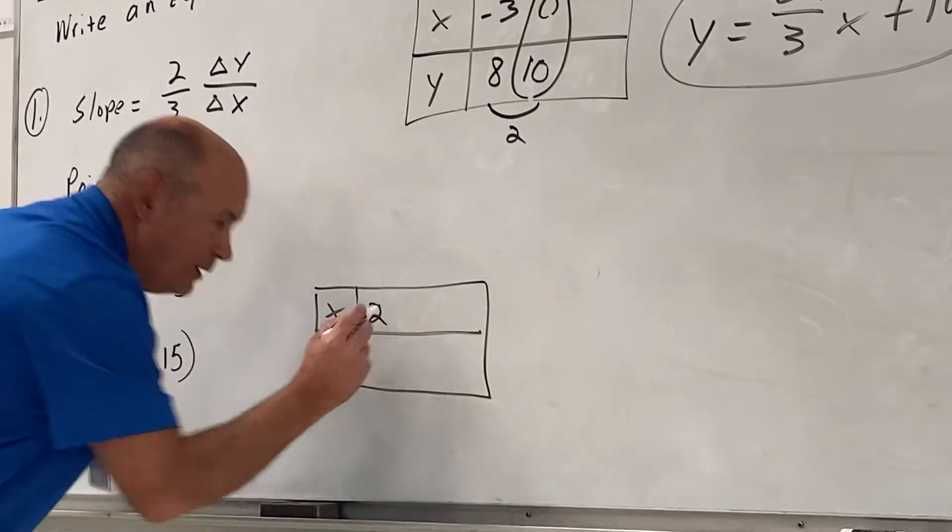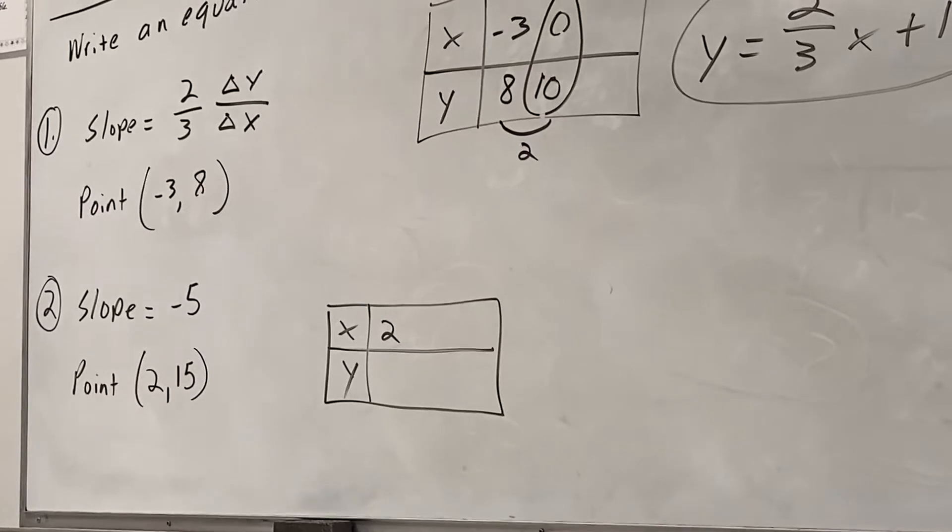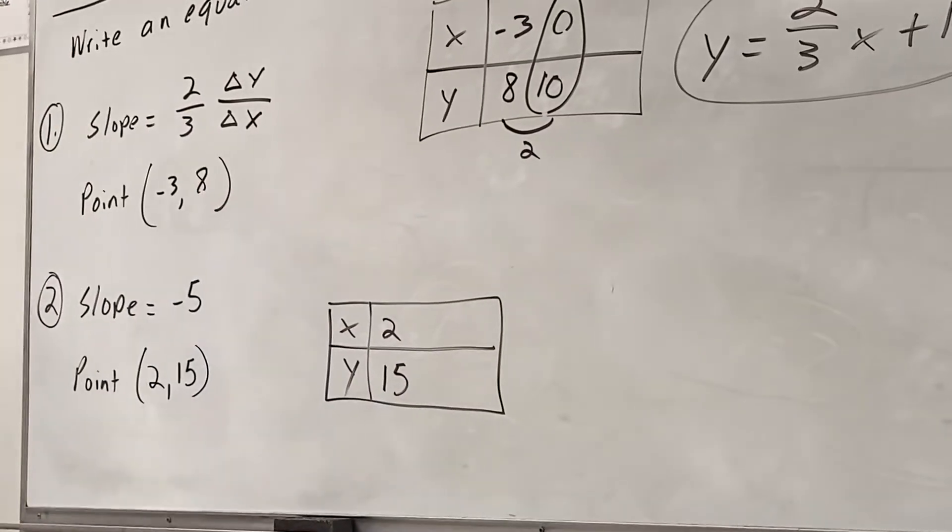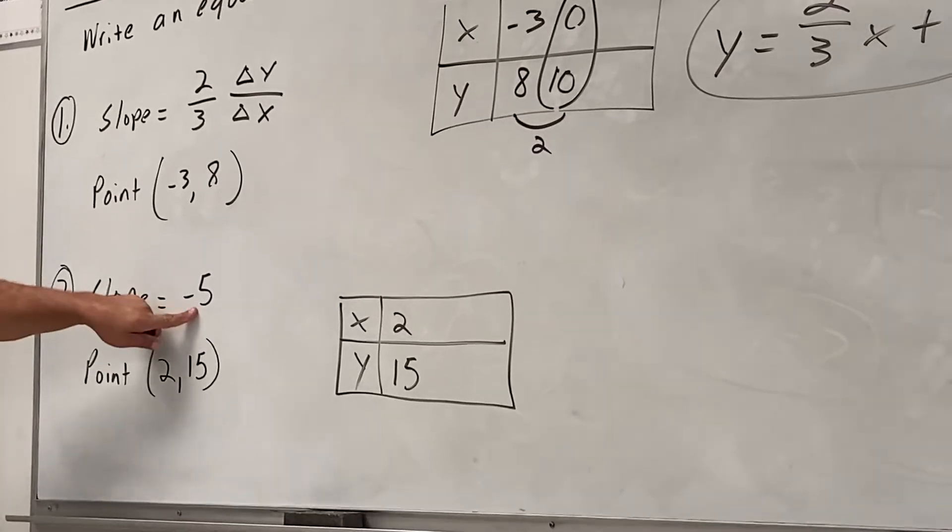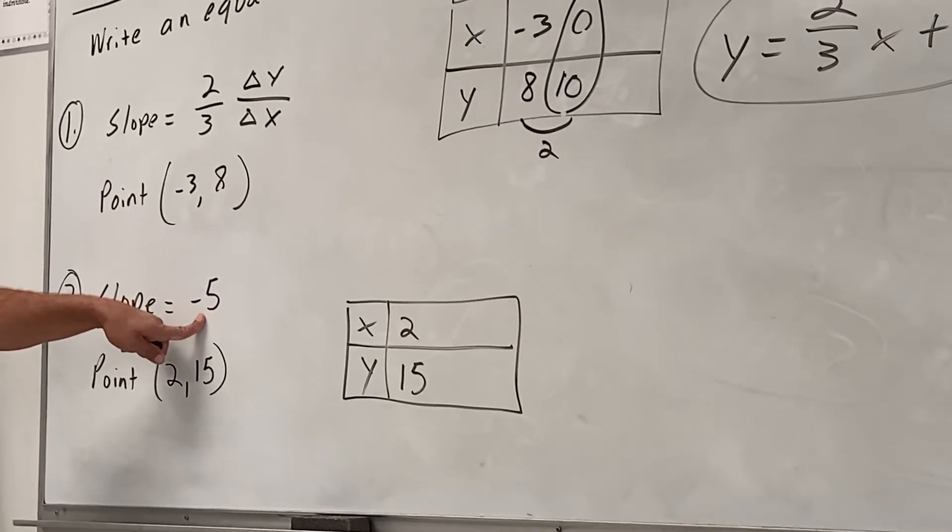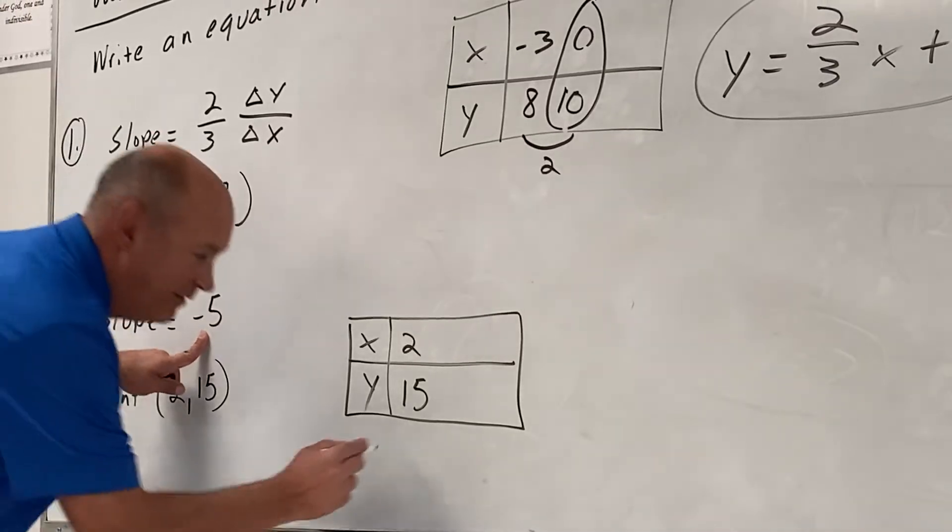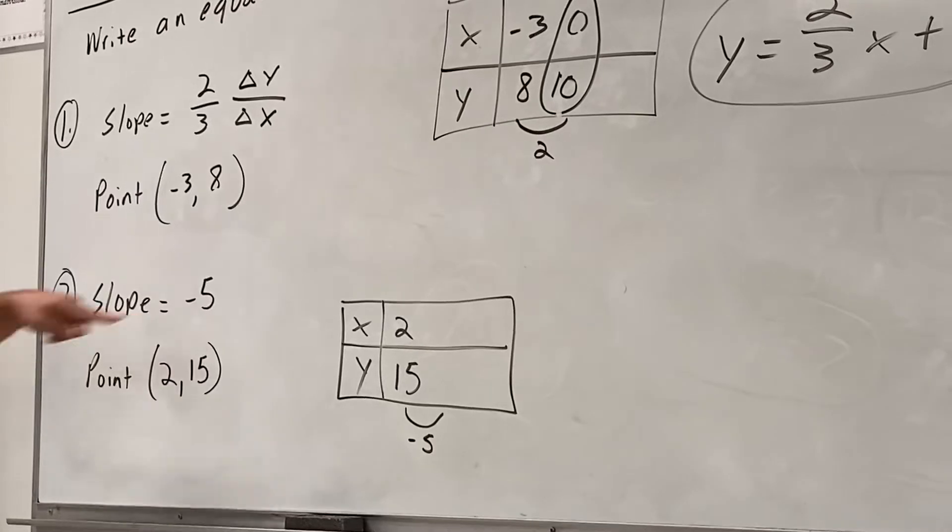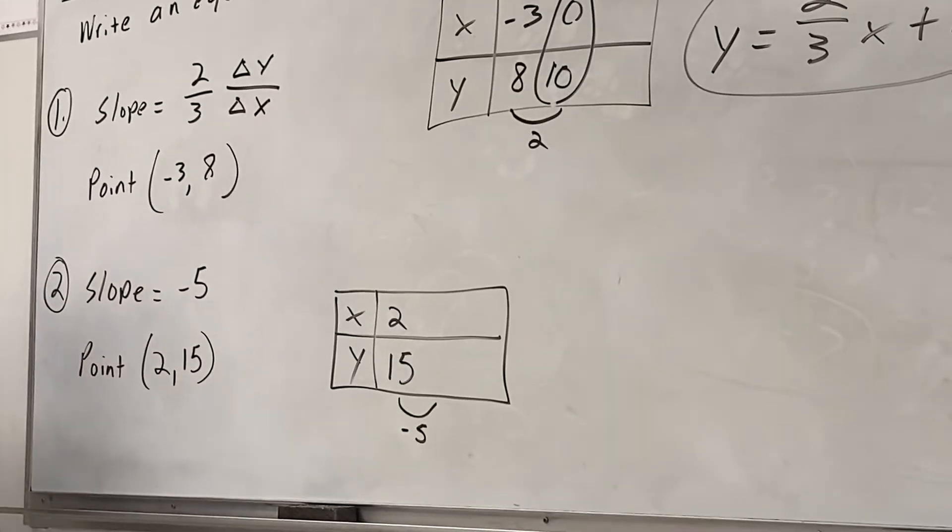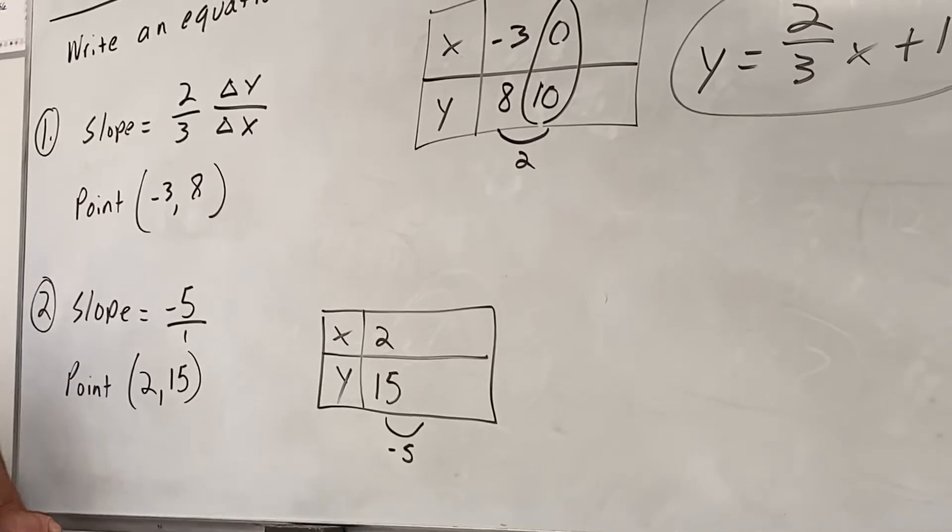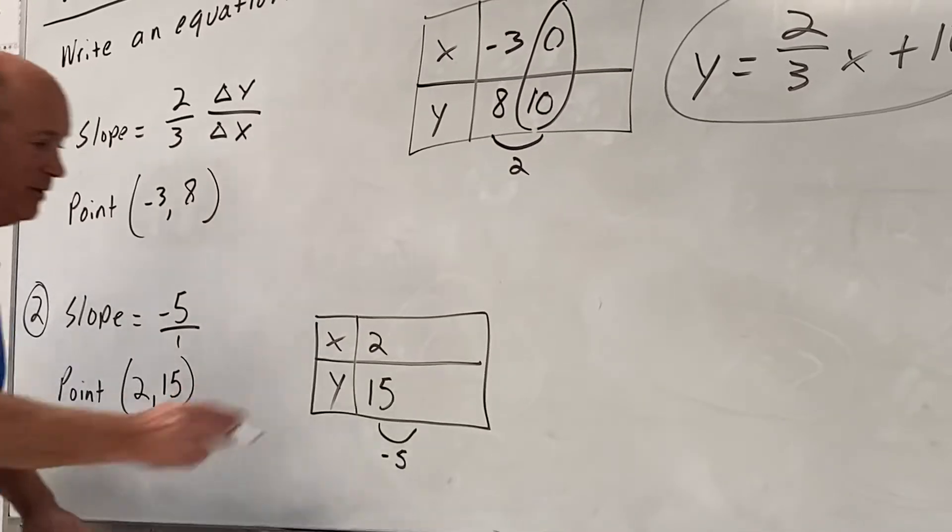What number goes on bottom, Kaylee? 15. All right. I need to get some more points. What are the y's going up by Bailey? Negative 5. They're going down 5. I agree with Bailey. How about the x's, Zach? Good. Because doesn't that slope really reduce to negative 5 over 1? Yes. So I agree with Zach. The x's are going up by 1.